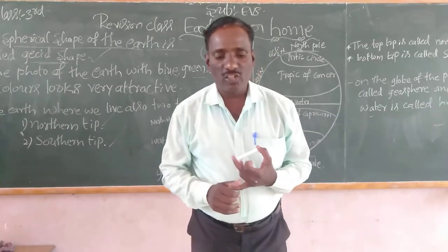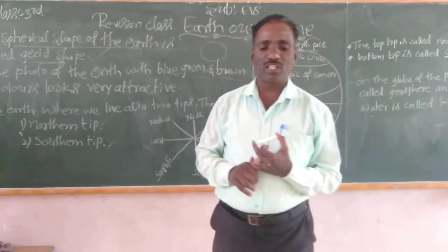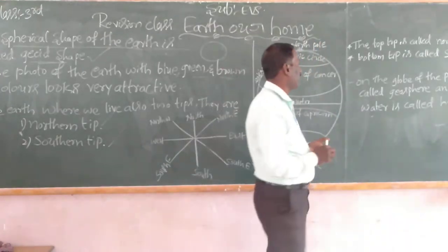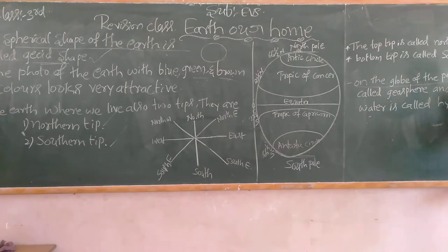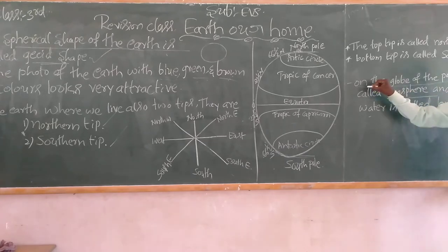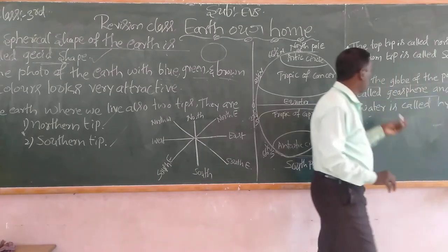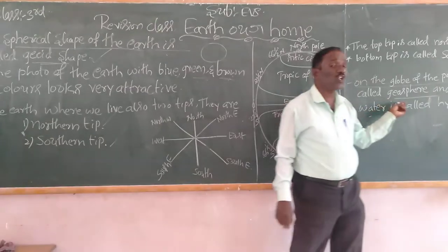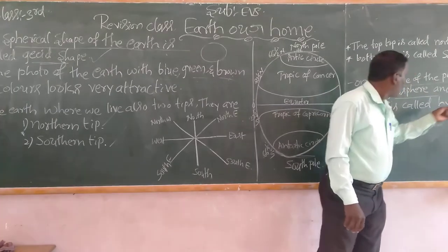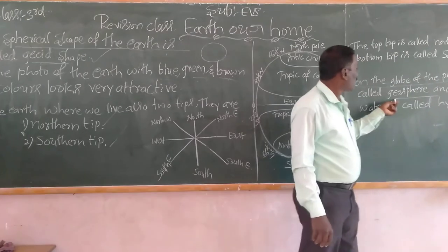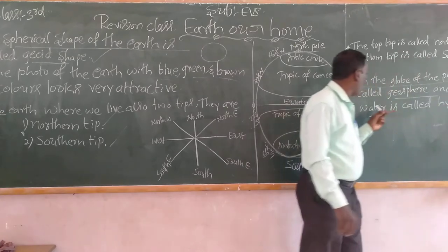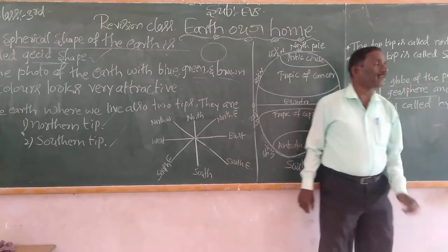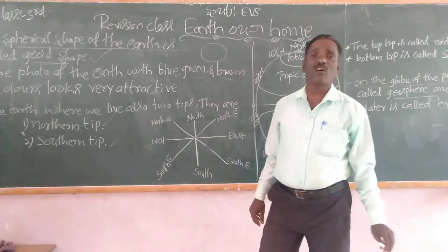Which colors have been used to mark the portion of land and water on the globe? The portion of land on the globe is called Geosphere. The portion of water is called Hydrosphere.